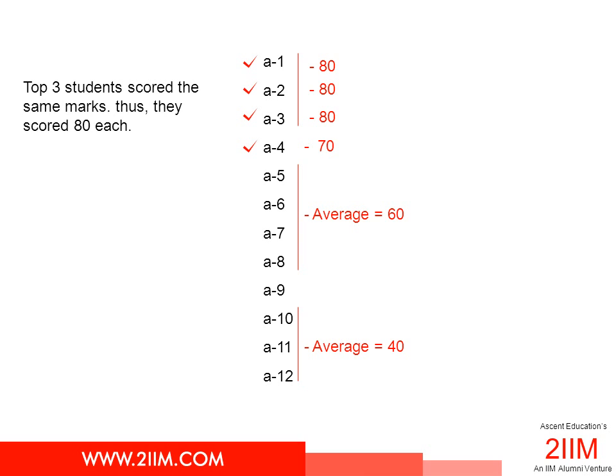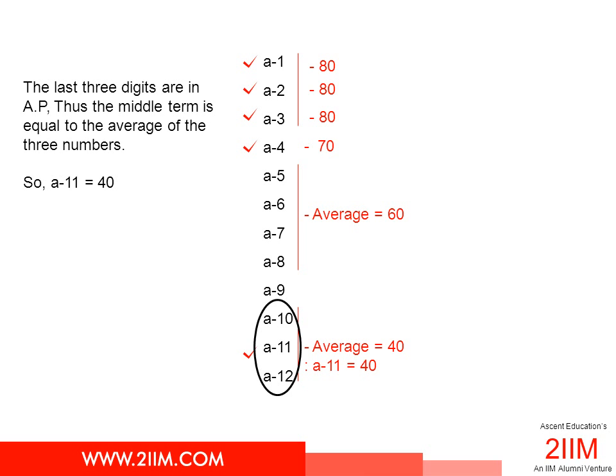We are also told that the last three scores are in AP. The average of any three terms in AP is the middle term. So the average of A10, A11, A12 should be A11. The average score is 40, so we know that A11 is equal to 40. We might not know what A10 or A12 is individually, but we know A11 is equal to 40.